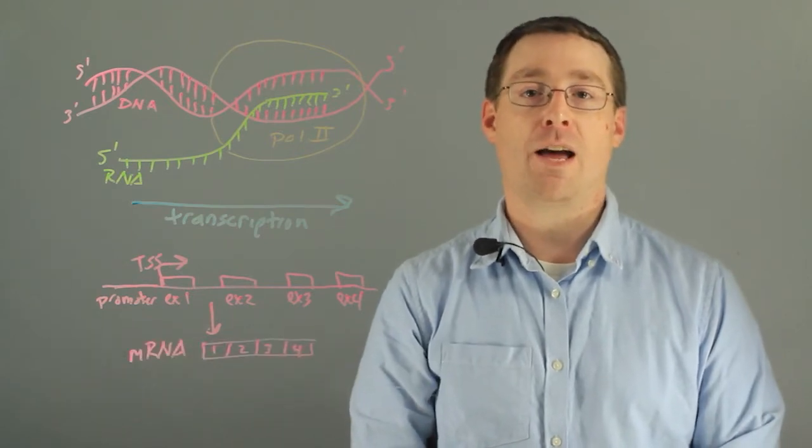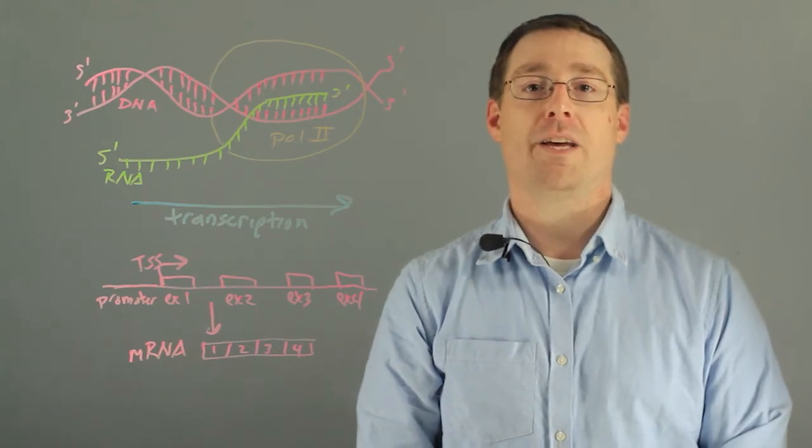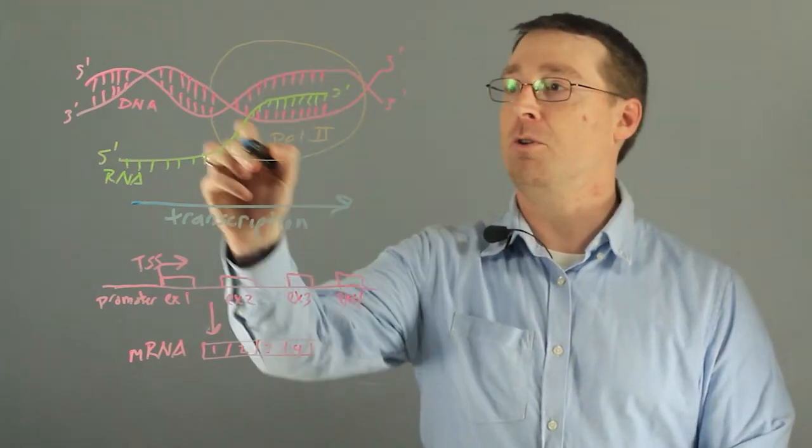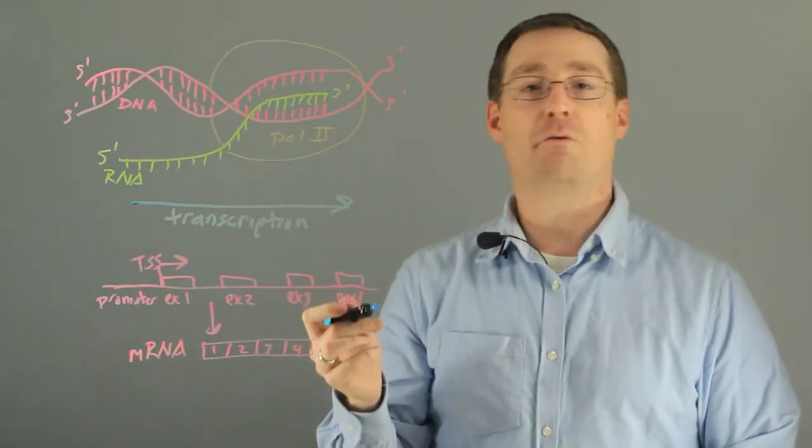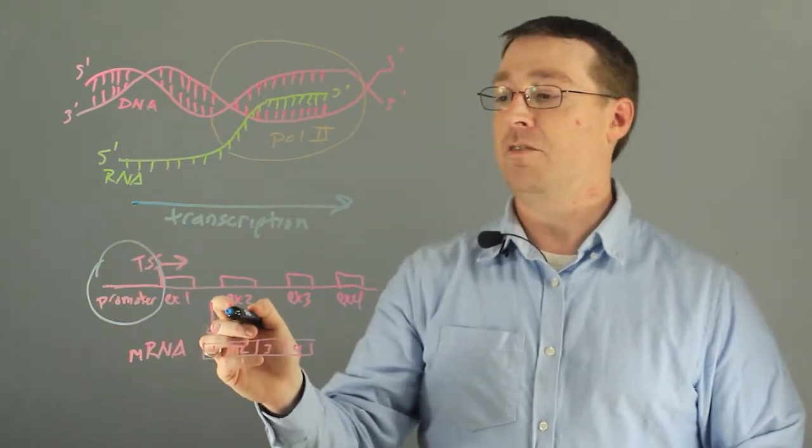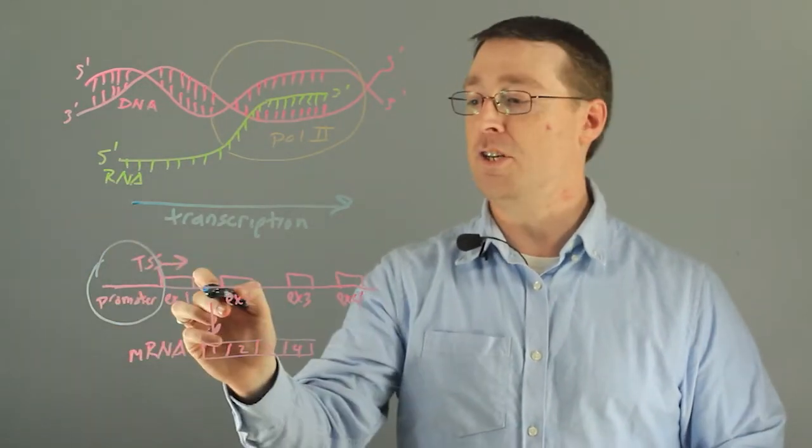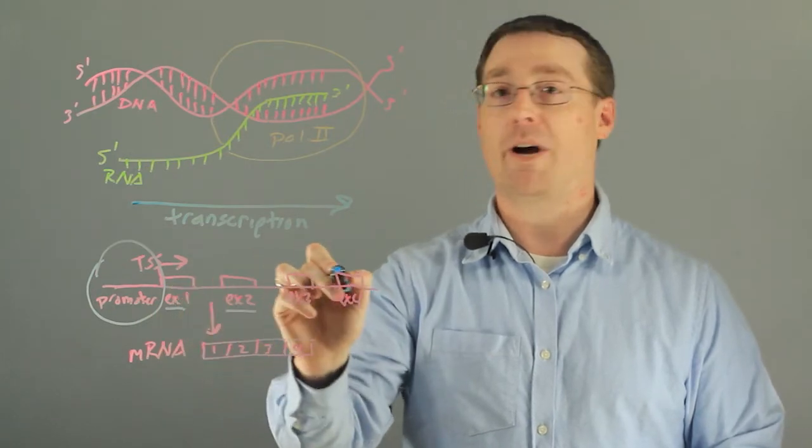Messenger RNA, or mRNA for short, is the result of transcription in which an RNA polymerase molecule, shown here in orange, binds to the promoter region of a gene. This is upstream of the coding sequence of a gene, which is specified by these exons and separated by introns.